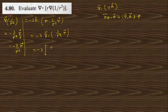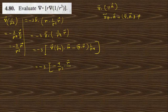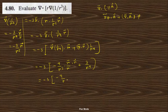So this can be written as the gradient of 1/R⁴ dot R vector, plus divergence of R times 1/R⁴. This is minus 3 times: minus 4 by R⁵ times R̂ — that is R vector by R — dot R vector, plus 3/R⁴. Since R̂ · R vector = R², and divergence of R = 3, this gives minus 3 times (−4/R⁴ + 3/R⁴), which gives minus 3 times (−1/R⁴). So the answer is 3 by R to the power 4.